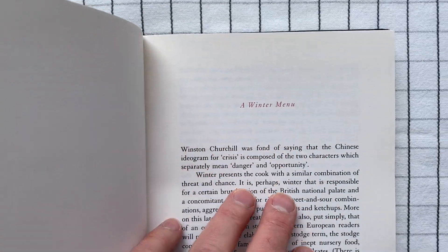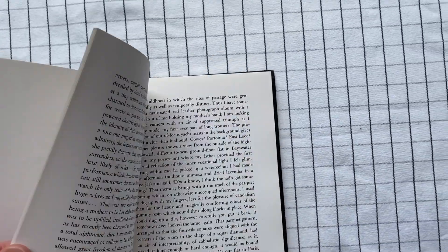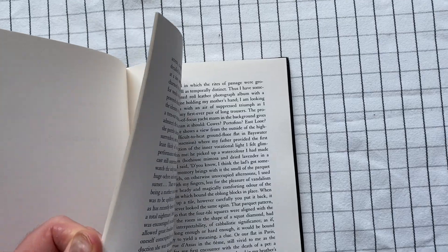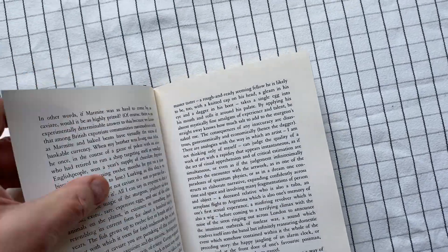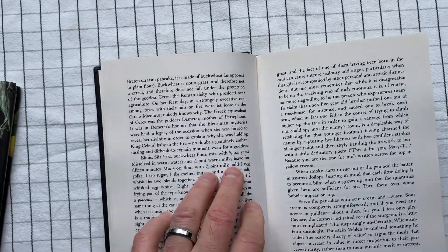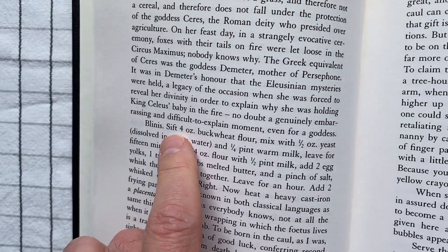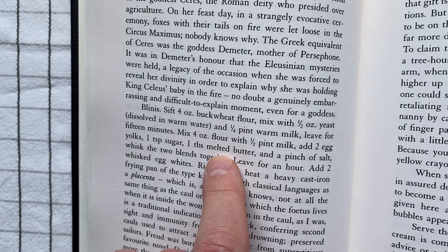As you can see, it starts with a winter menu and throughout he's talking about different sorts of foods and what they mean to him. And look, he even gives what amounts to a recipe. He tells you how to make the thing.